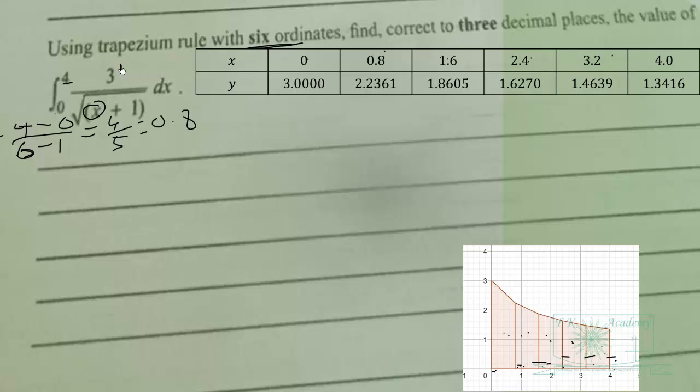Then plug in 0.8 and write it to at least four decimal places because you have to correct to three decimal places. Continue plugging in each x value to get the corresponding y values until you reach the last one.